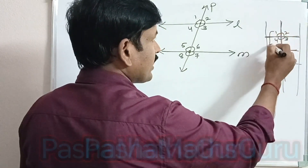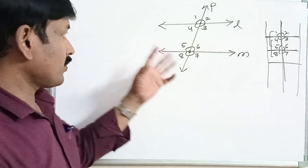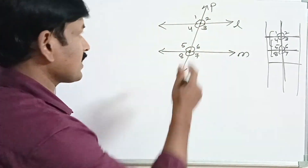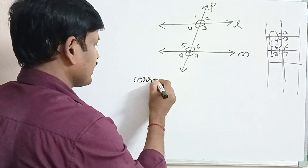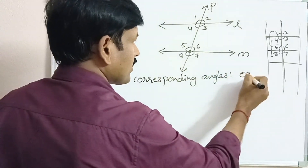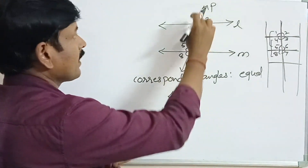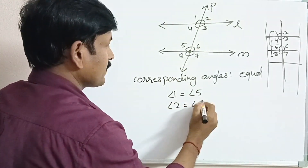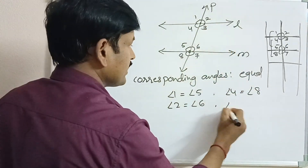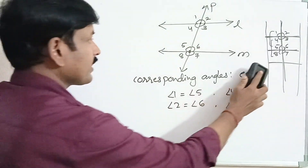Observe angles 1 and 5, and 4 and 8 — corresponding angles — they are equal. So we can say: if a pair of parallel lines are intersected by a transversal, then the angles in each pair of corresponding angles are equal. That is, angle 1 = angle 5, angle 2 = angle 6, angle 4 = angle 8, and angle 3 = angle 7.